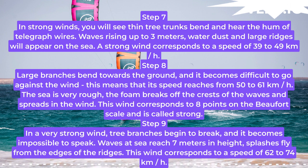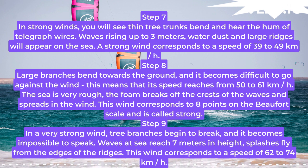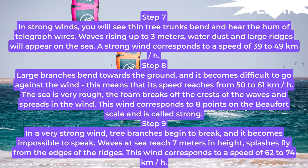Step 8. Large branches bend towards the ground and it becomes difficult to go against the wind. This means that its speed reaches from 50 to 61 km/h. The sea is very rough, the foam breaks off the crests of the waves and spreads in the wind. This wind corresponds to 8 points on the Beaufort Scale and is called strong.